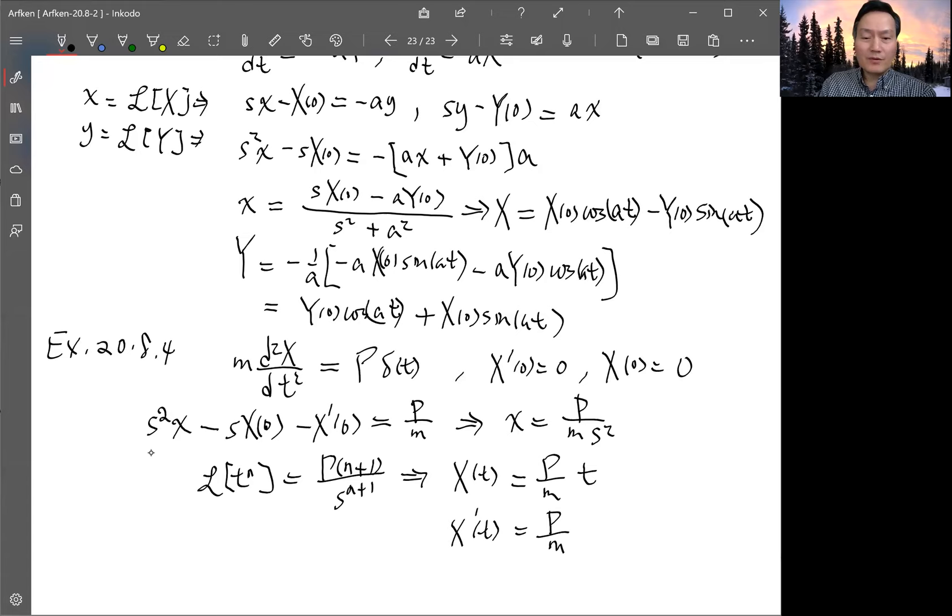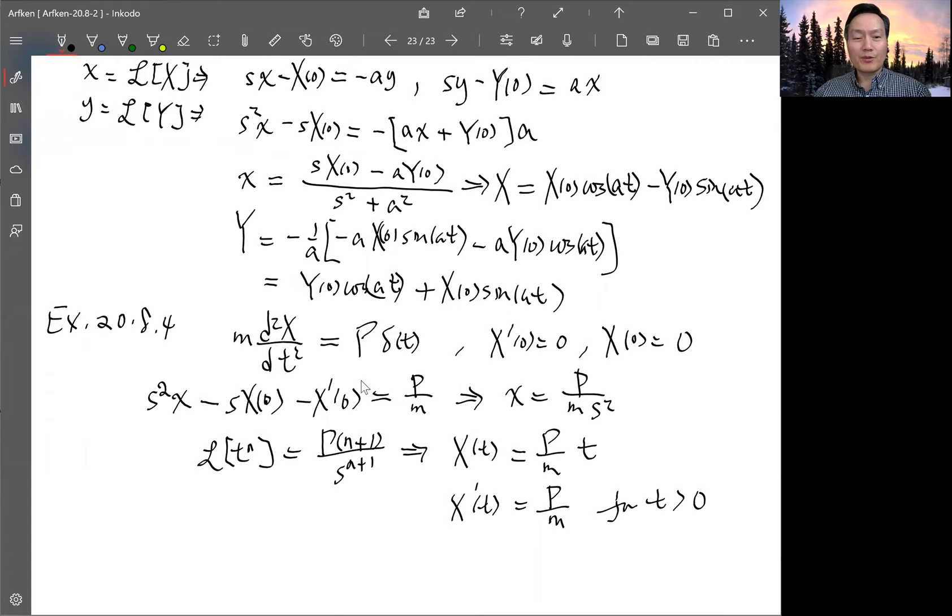For t greater than 0 actually. When t is 0, it's actually 0. So the solution is that the velocity x prime just have a sudden increase from 0 to a finite value when t is greater than 0. So this is because, this is due to an infinite force or a finite impulse at t equals 0. So the velocity jumps a finite amount, so after that displacement just keeps moving linearly with constant velocity. So that's the solution of this impulse problem.